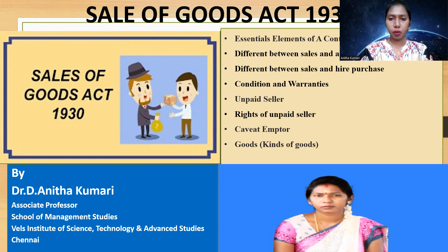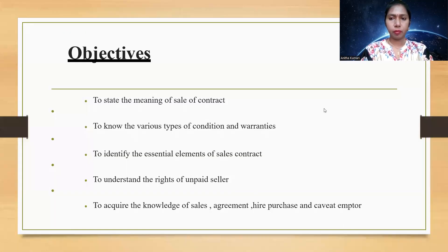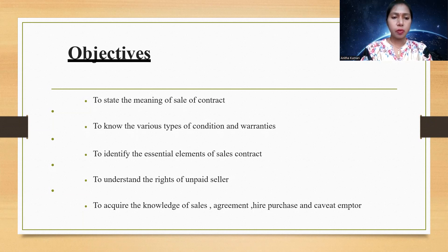Let us move on. The objectives of our Sale of Goods Act are: to state the meaning of contract of sale, to know the various types of condition and warranties, to identify the essential elements of a contract of sale, to understand the rights of unpaid seller, and to acquire the knowledge of sales, agreement to sales, hire purchase, and caveat emptor.